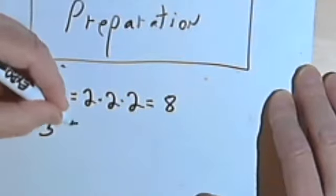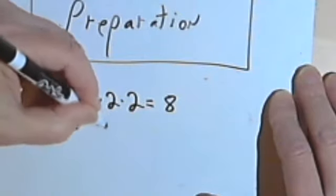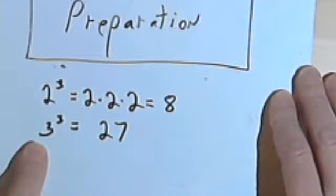In the same way, if you see a 3 to the third power, 3 to the third power is 27. I want you to recognize 27 as 3 to the third power.